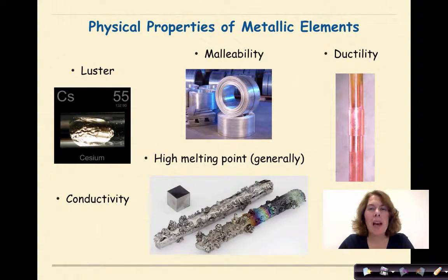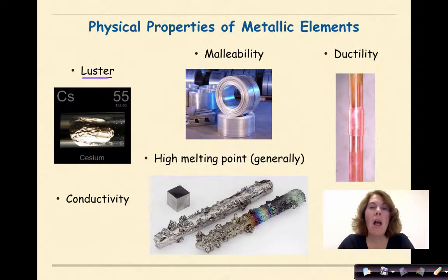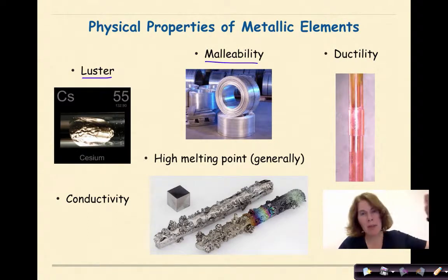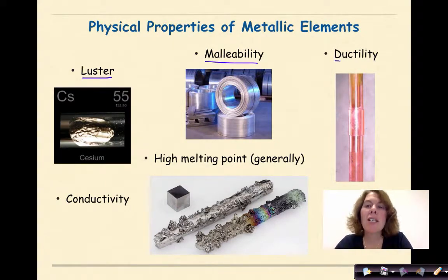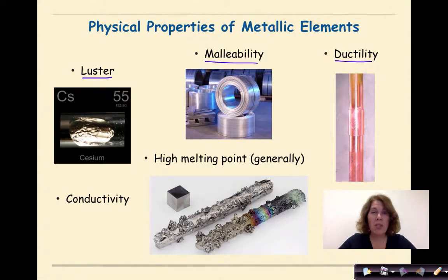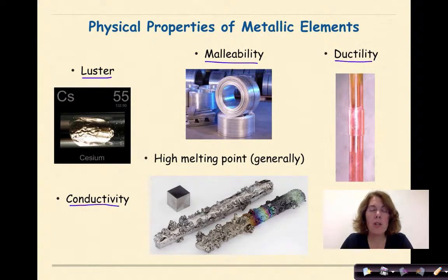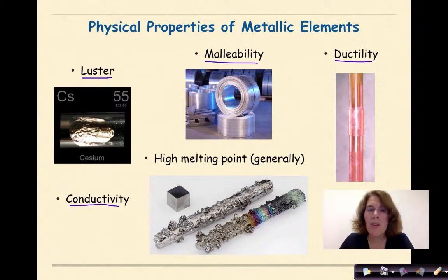Physical properties of metallic elements: metals typically have luster, which means that they're shiny. They're malleable, which means they can be pounded into thin sheets. They have ductility, which means they can be drawn out into thin wires — ductwork, pipes. They are conductive; they can conduct an electric current. If you've ever been shocked by a metal, you know exactly what I mean. And they typically — not all the time — but they typically have high melting points.